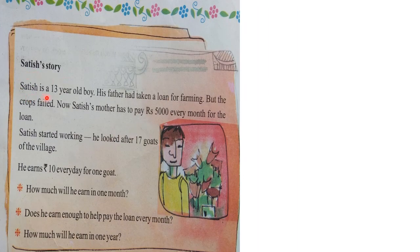Here is Satish's story. Satish is a 13-year-old boy. His father had taken a loan for farming but the crop failed. Now Satish's mother has to pay Rs. 5,000 every month for the loan. Satish started working — he looked after 17 goats of the village. He is a very small boy, only 13 years old, yet he works to help repay the loan. He earns Rs. 10 every day for looking after 1 goat.